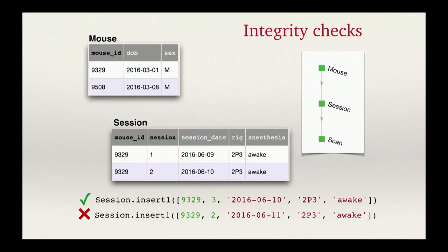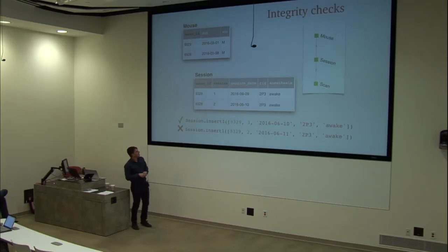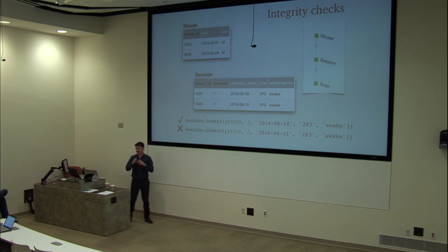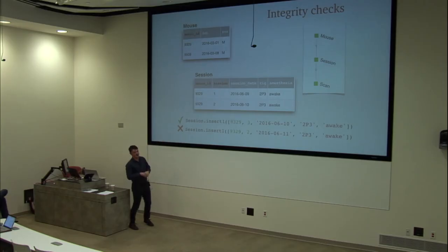Once you define the structure of the database, DataJoint enforces integrity constraints. If you try to enter a session that already exists, it will reject it because it's not unique. If you try to add a session for which there is no mouse, it will also reject it. It doesn't allow duplicates, ensuring each entity appears only once, and it forces you to follow all the steps in the pipeline.